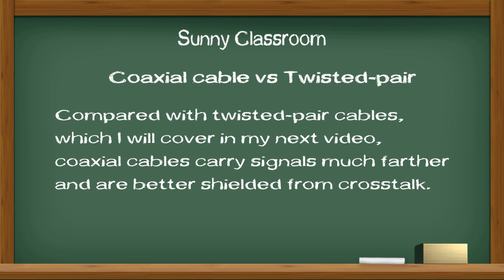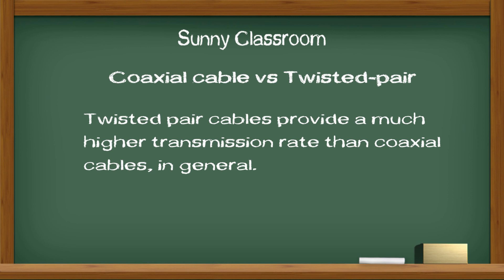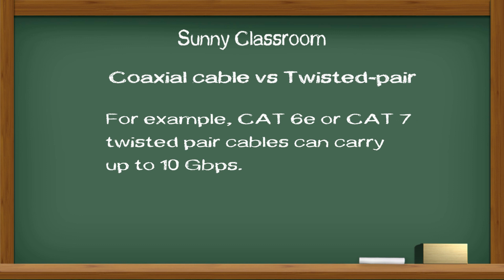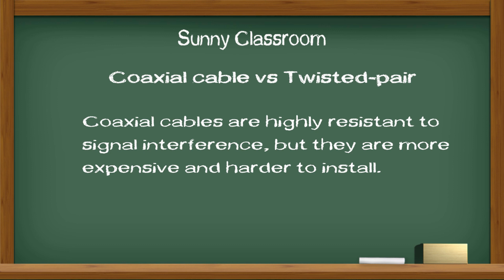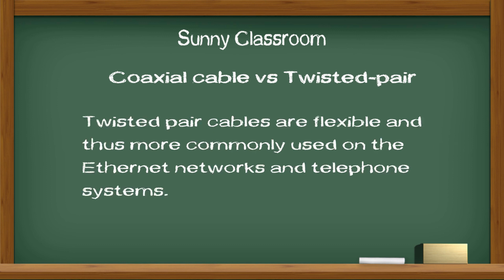Compared with twisted pair cables, which I will cover in my next video, coaxial cables carry signals much further and are better shielded from crosstalk. Twisted pair cables provide a much higher transmission rate than coaxial cables in general — for example, CAT 6E or CAT 7 twisted pair cables can carry up to 10 Gbps. Coaxial cables are highly resistant to signal interference, but they are more expensive and harder to install. Twisted pair cables are flexible and thus more commonly used on Ethernet networks and telephone systems.